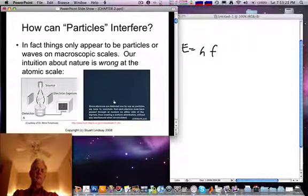Since electrons are detected one by one as particles, we have to conclude that each electron must have passed through at random on either side of the biprism, thus creating a uniform distribution without any interference when accumulated.